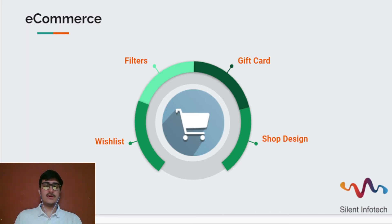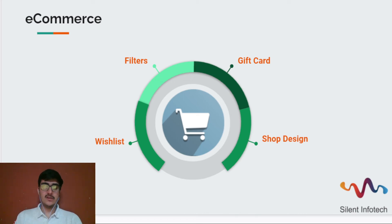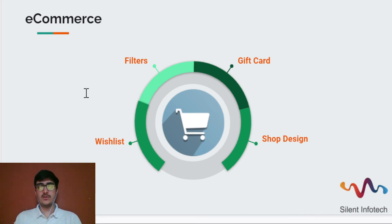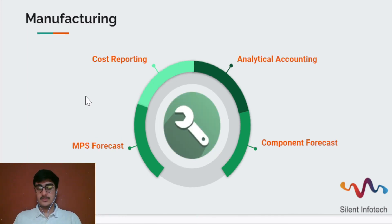You can now send automated notifications to customers who have subscribed for out-of-stock products. There is also a wishlist feature, and you can now filter products more effectively, along with a price range filter, so that you can browse through specific product categories.